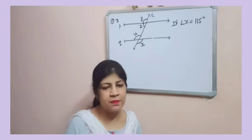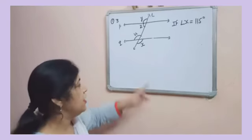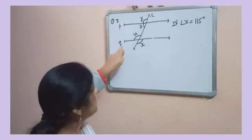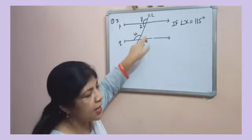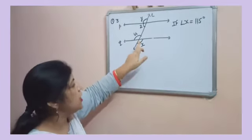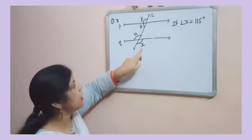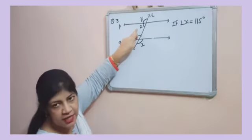Now let's do questions based on parallel lines. You can see P and Q are two parallel lines and R is a transversal, and here are some angles given: X, U, Y, Z.